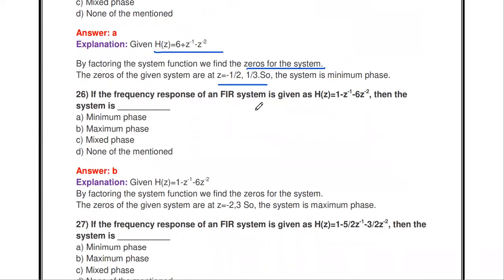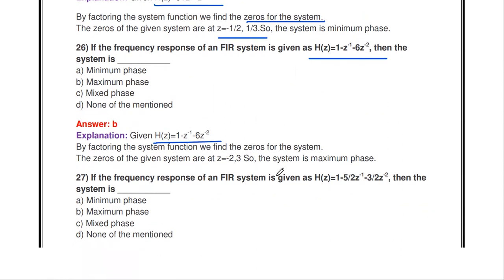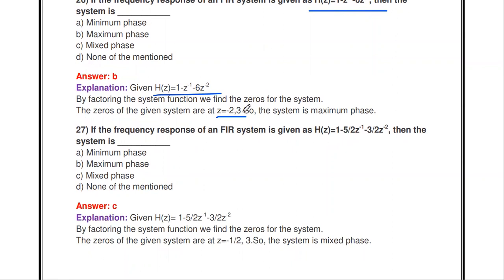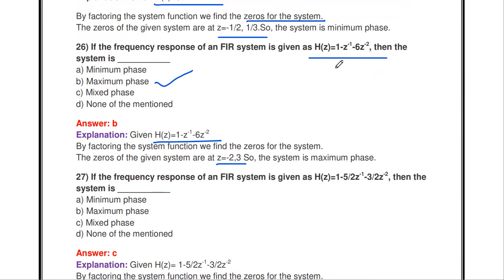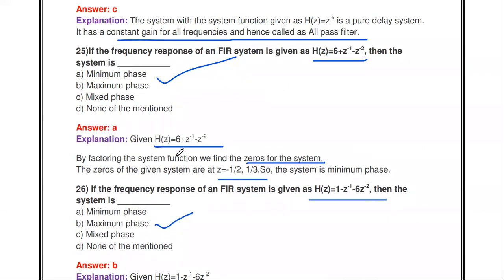If the frequency response of an FIR filter is H(Z) = 1 - Z^(-1) - 6Z^(-2), the zeros (roots of numerator polynomial) are -2 and 3, both with magnitude greater than one, so the system is maximum phase. Minimum phase: zeros have magnitude less than one. Maximum phase: zeros have magnitude greater than one.